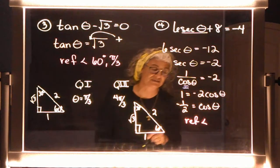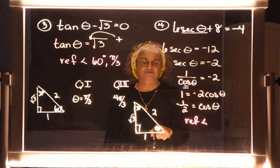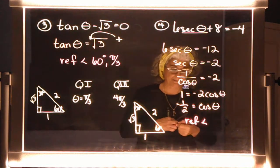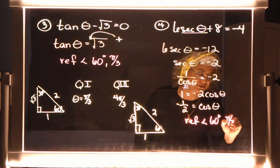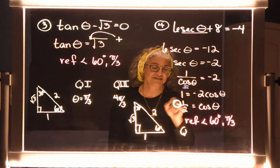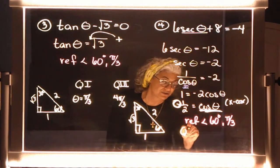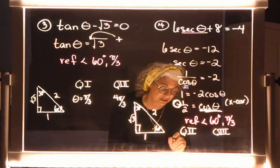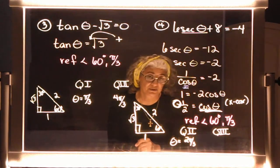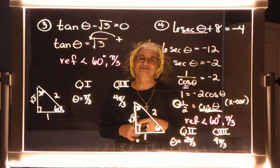Which angle gives cosine equal to one half? It's 60 degrees, because that's the adjacent side — so the reference angle is 60 degrees, or pi over three in radians. Now figure out the quadrants. The answer is negative, and cosine refers to the x coordinate. X is negative in quadrants two and three. So in quadrant two, theta is two pi over three, and in quadrant three, theta is four pi over three.